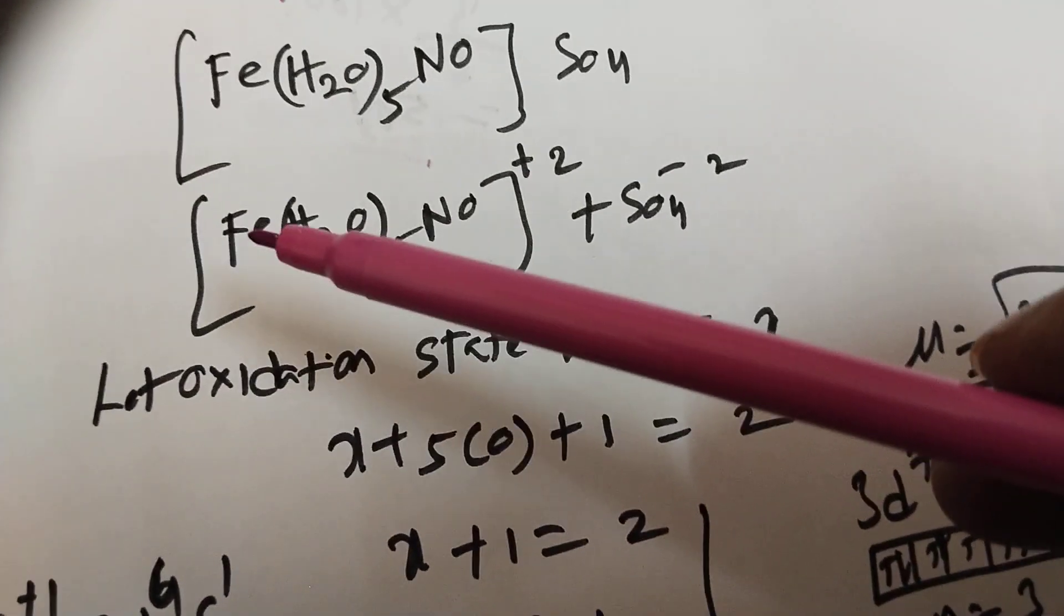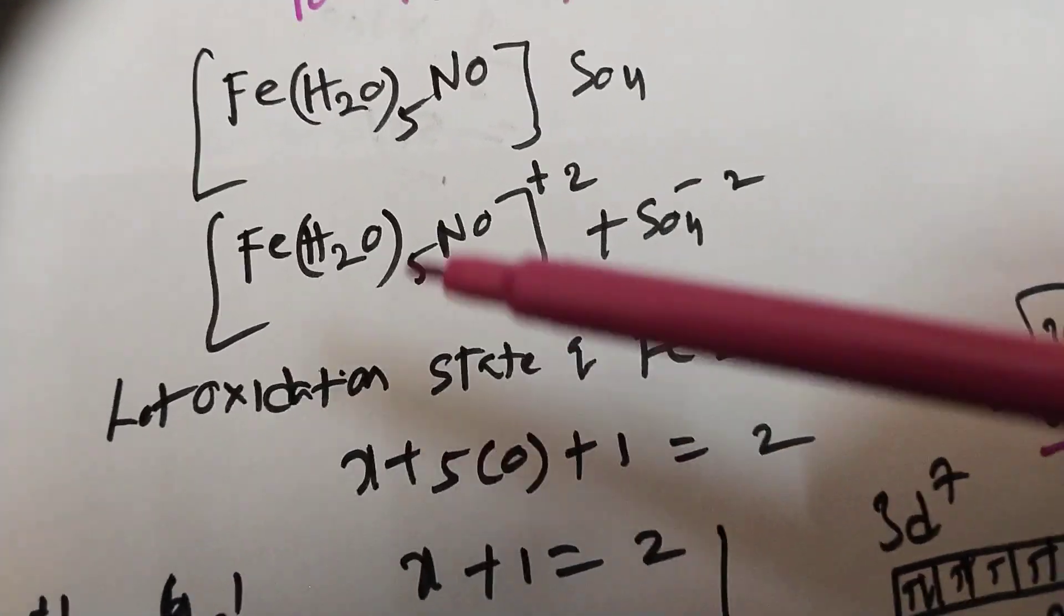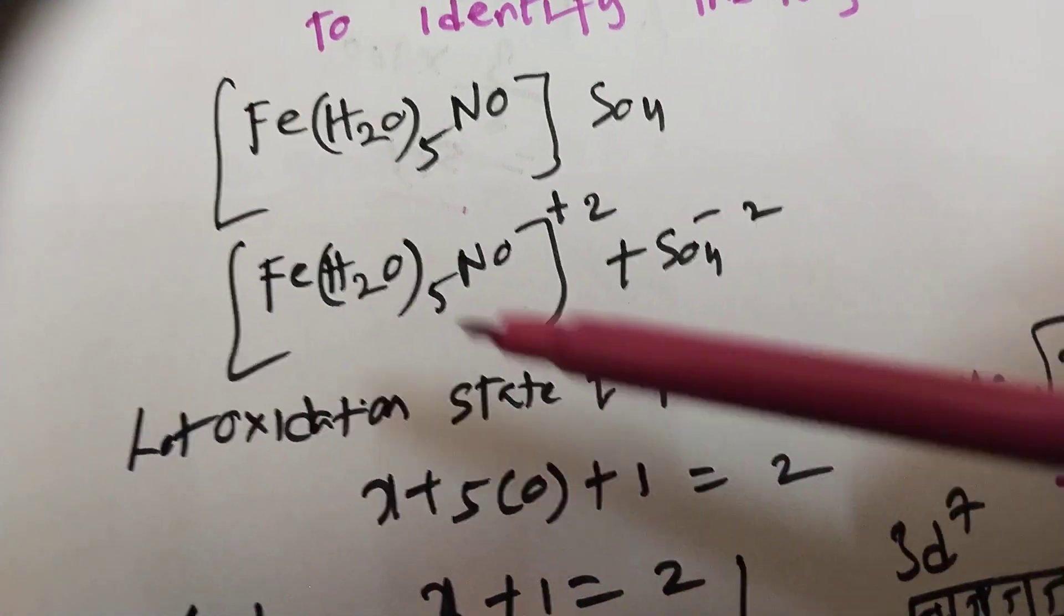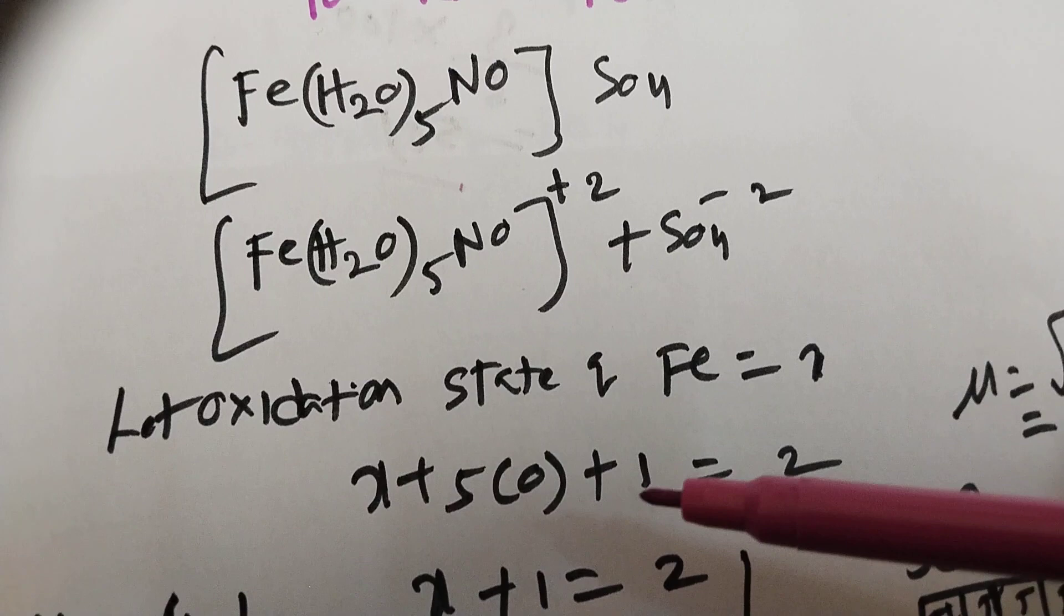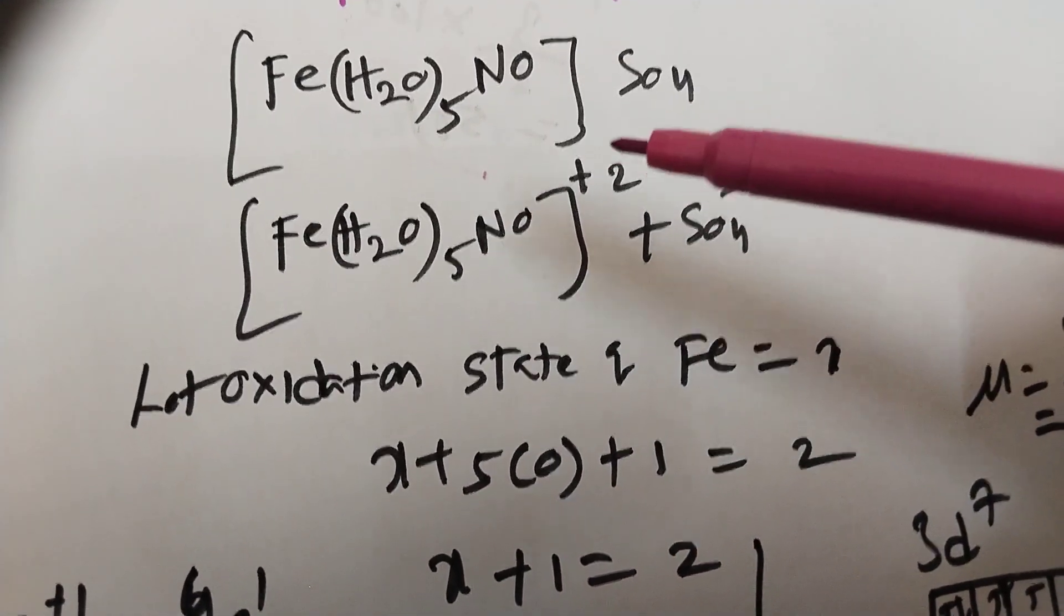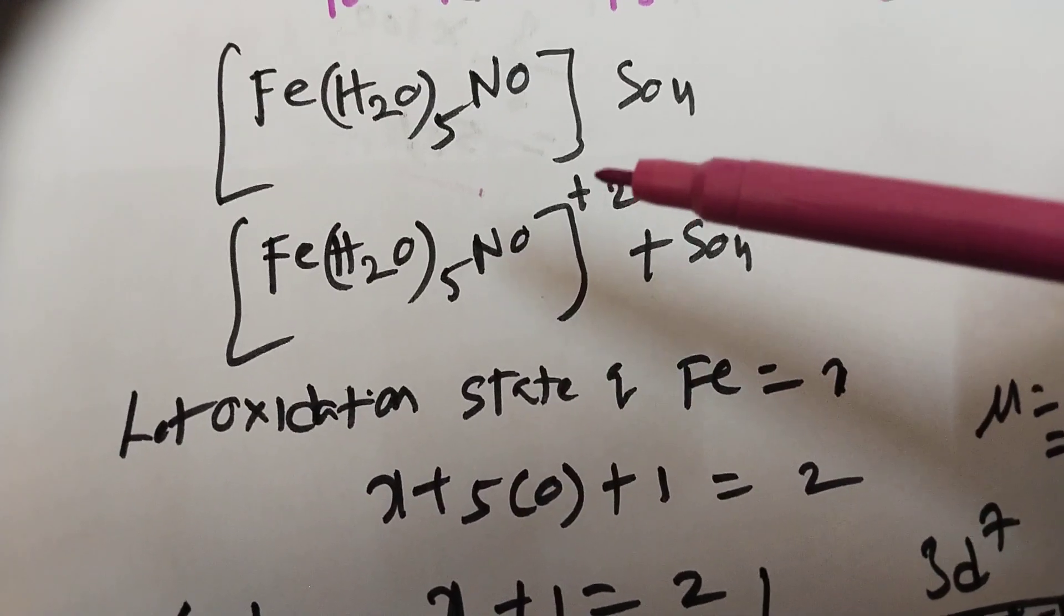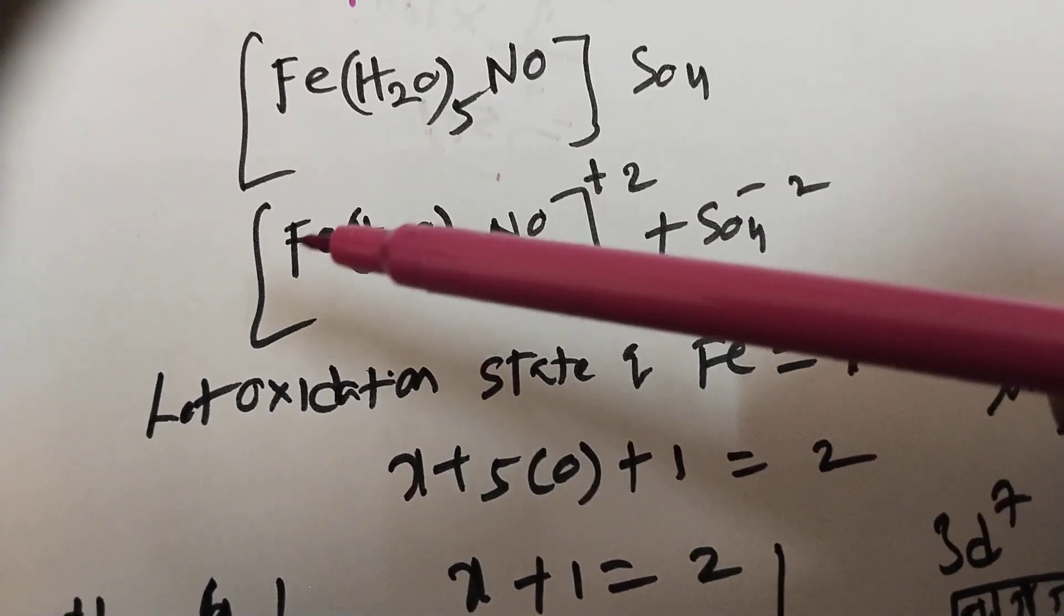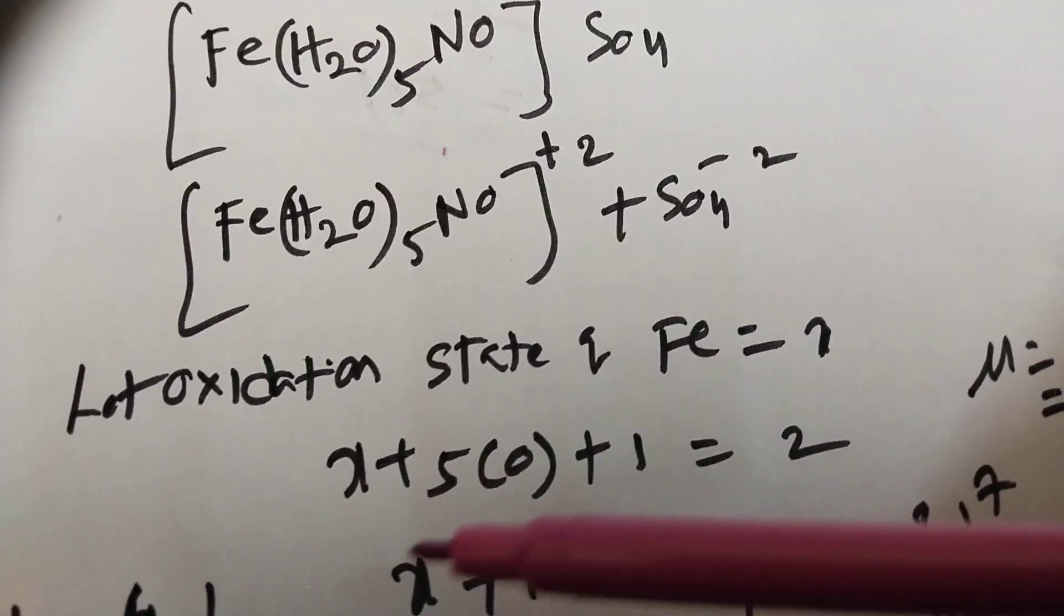Now I want to calculate the oxidation state of iron. If you say, let it be X. H2O is neutral, the charge is 0. X plus 5 into H2O is 0. Nitrosyl NO plus 1, that is plus 1, is equal to 2. You have to equal to 2, the charge present in the complex is 2. What happens?